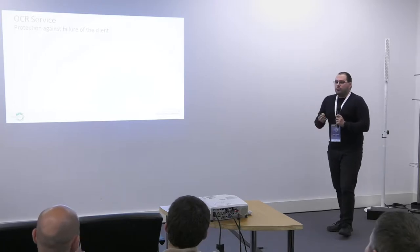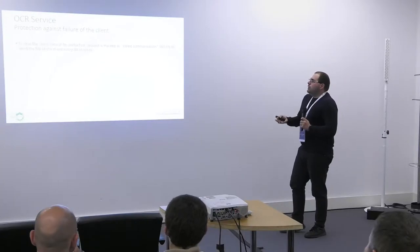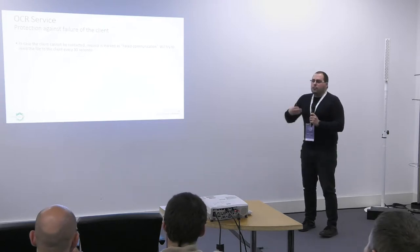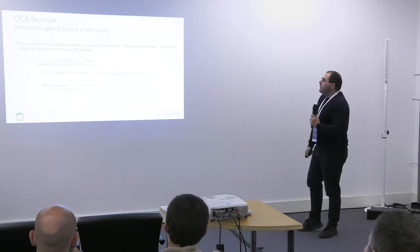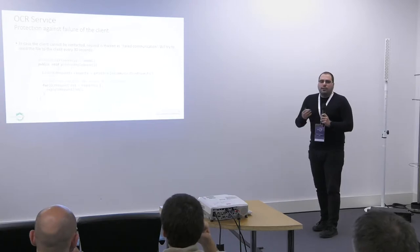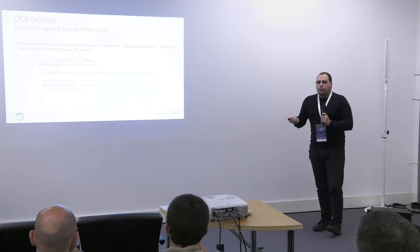We also wanted the OCR service to be protected against failures of the client. If Alfresco goes down and the OCR service finishes OCR'ing a file, we don't want to drop it. We keep it and mark it as a failed communication. Then every 30 seconds, a scheduled task gets all communication-failed requests and sends them again to the client. This way we can be sure that when Alfresco is available again, we will reply back with the file.